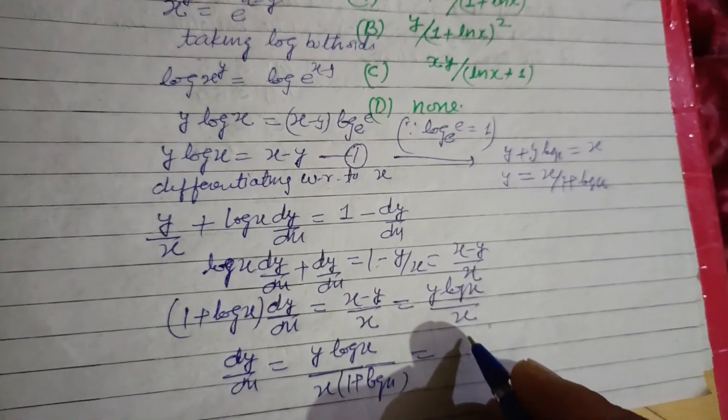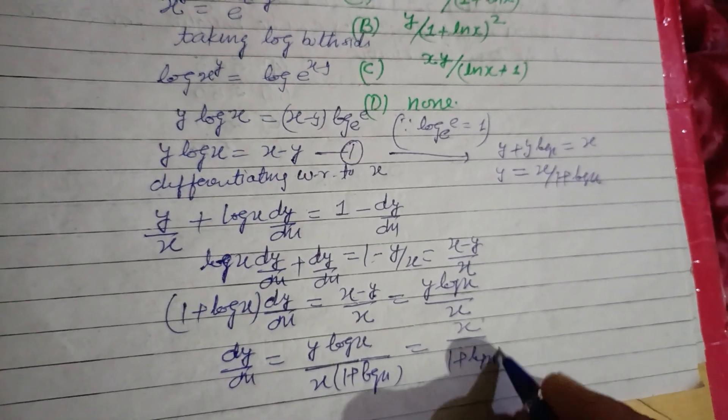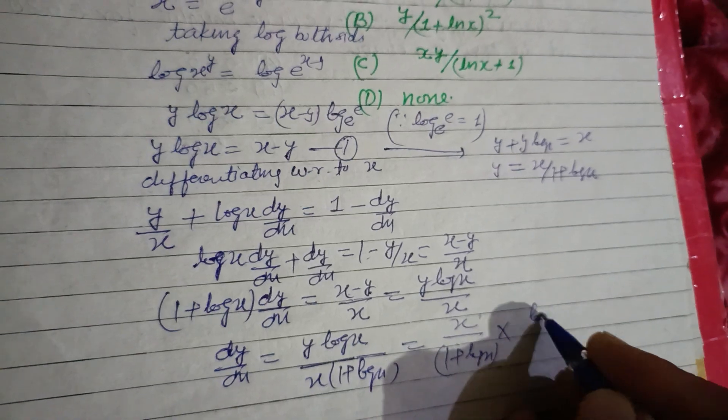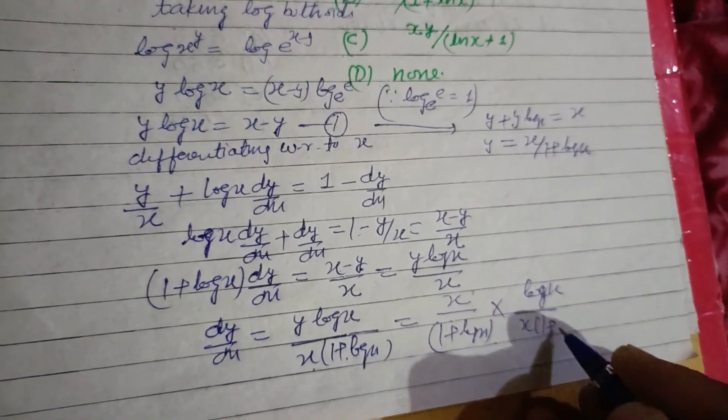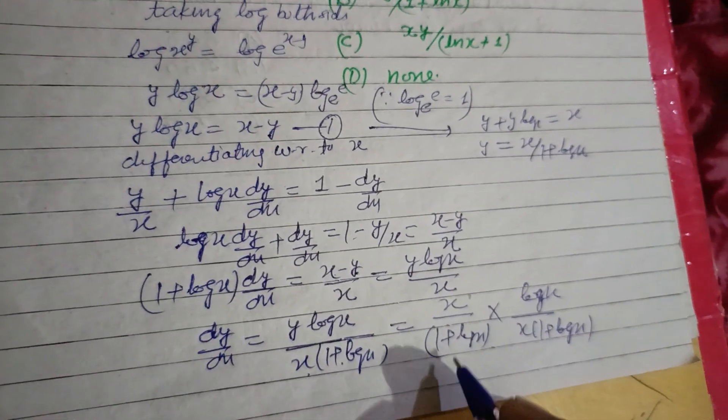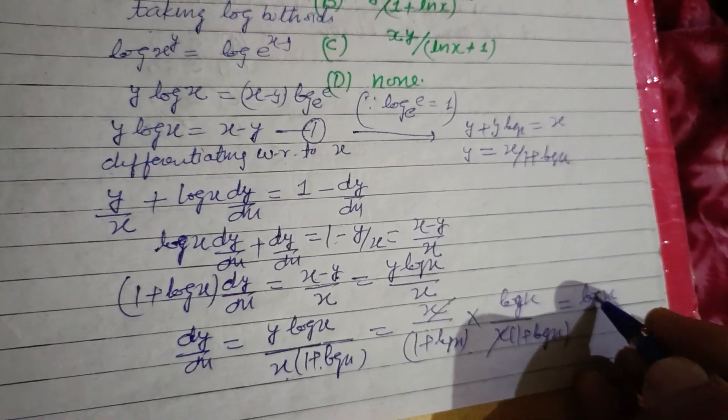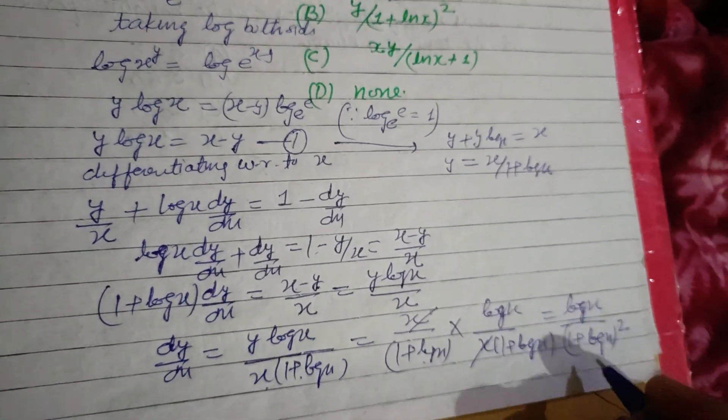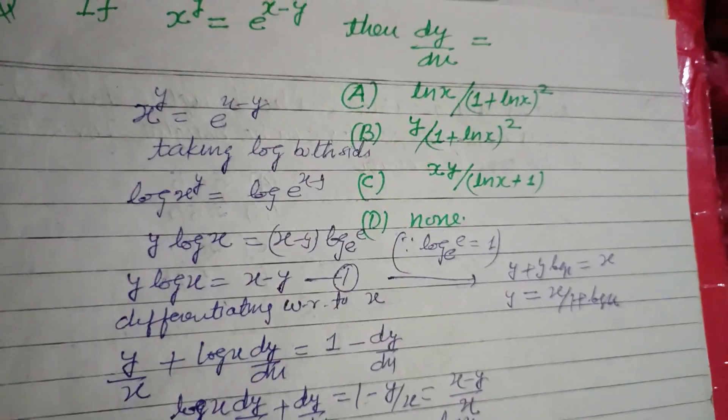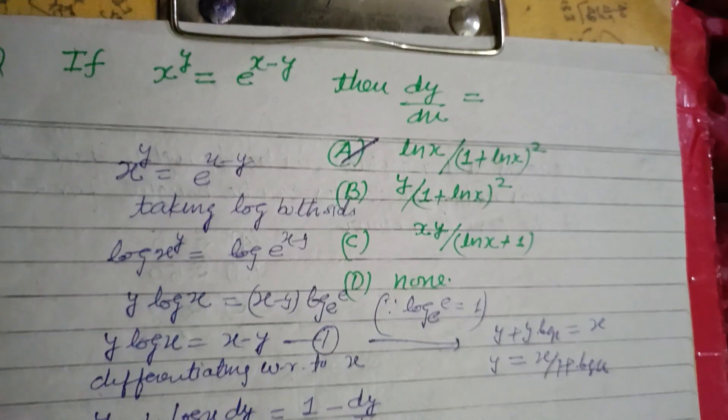Value of y, which is x over 1 plus log x. So from here y equals x over 1 plus log x times x into 1 plus log x, so x cancels. Finally we got log x over 1 plus log x whole square, which is found in option A.